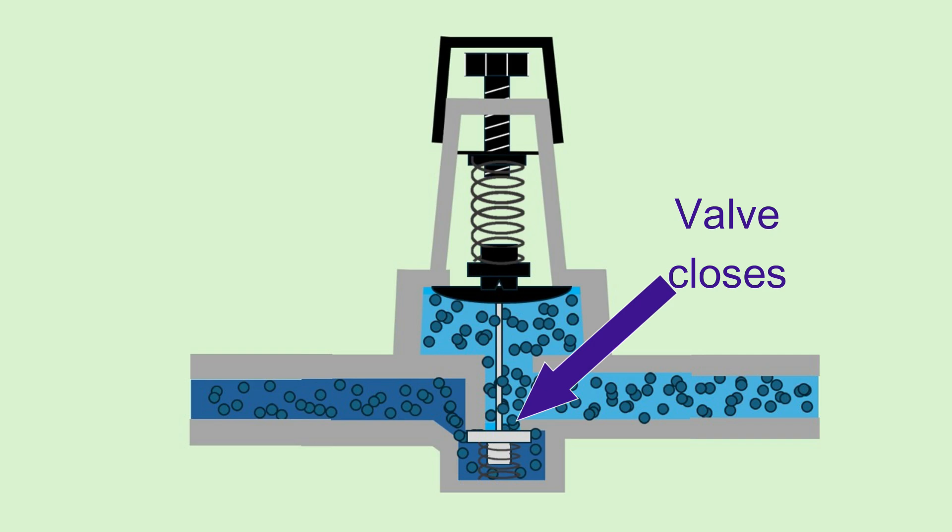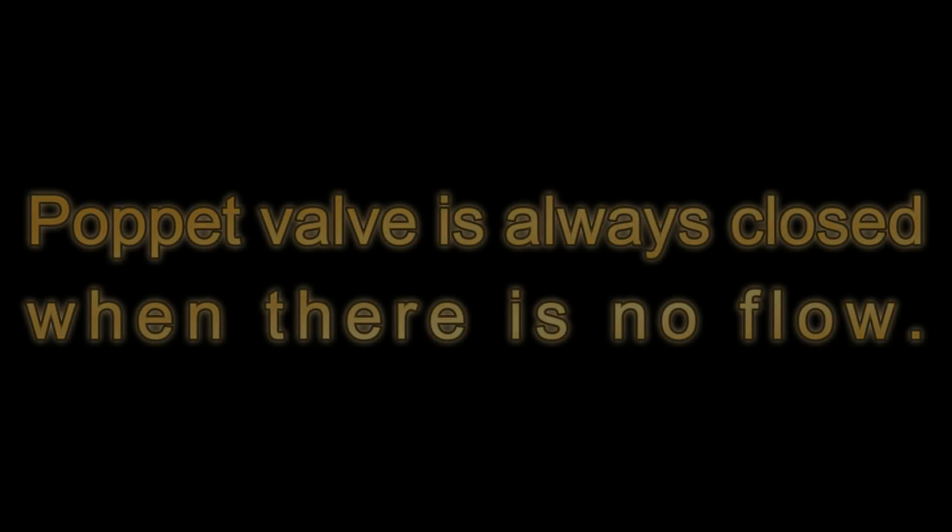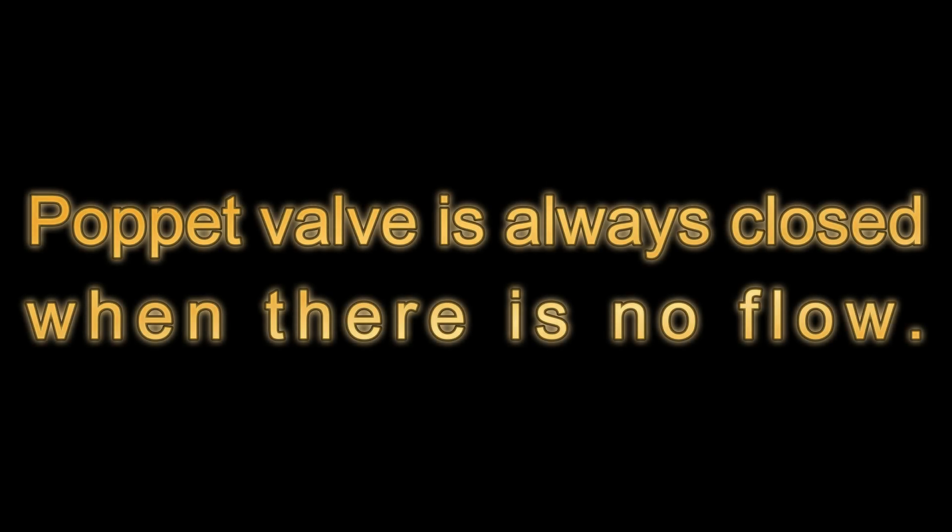basically locking in the lower pressure on the house side of the valve. As long as there is no demand for water to the home, in other words, if there is no water flowing, then the poppet valve must be closed. Let's take a quick look at why.